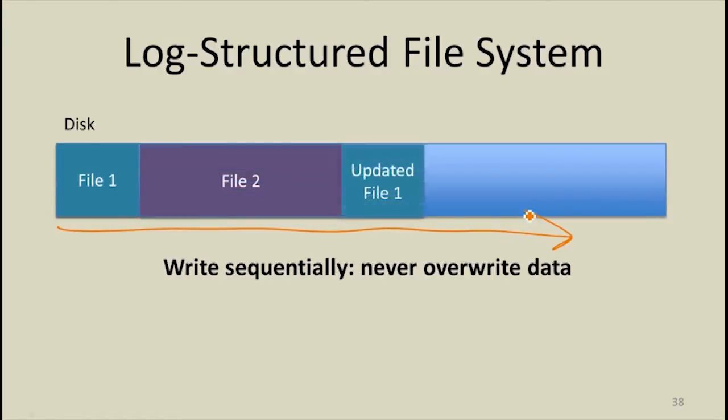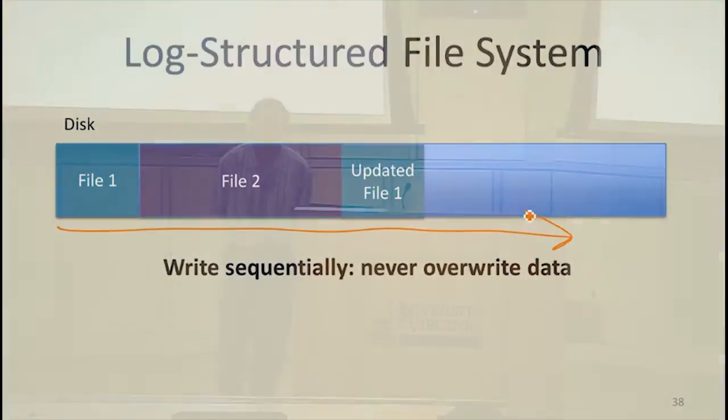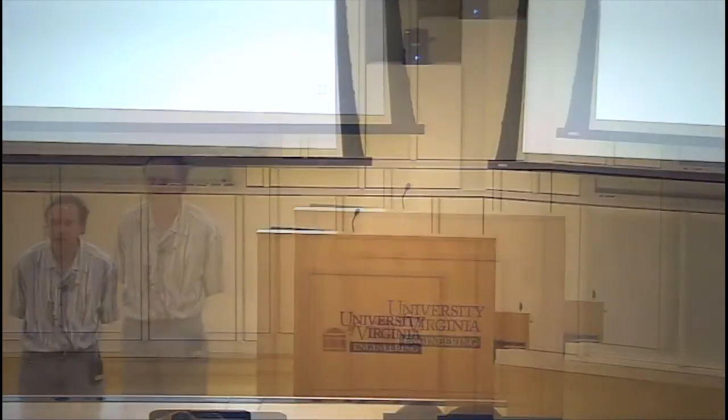When we update file 1, instead of changing the contents stored, we're just going to write a new version of that disk block. So is it this simple? What are the things that we should be worried about if this is our new design for a file system? We have to have some way to find the correct version of file 1, the correct version of that block.